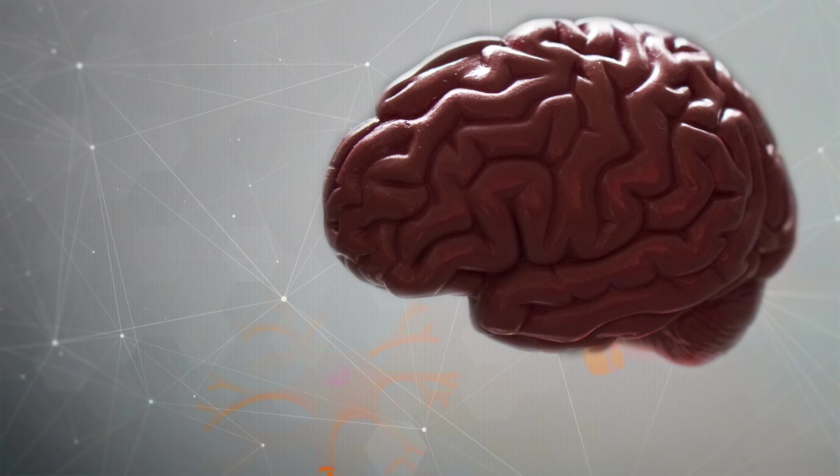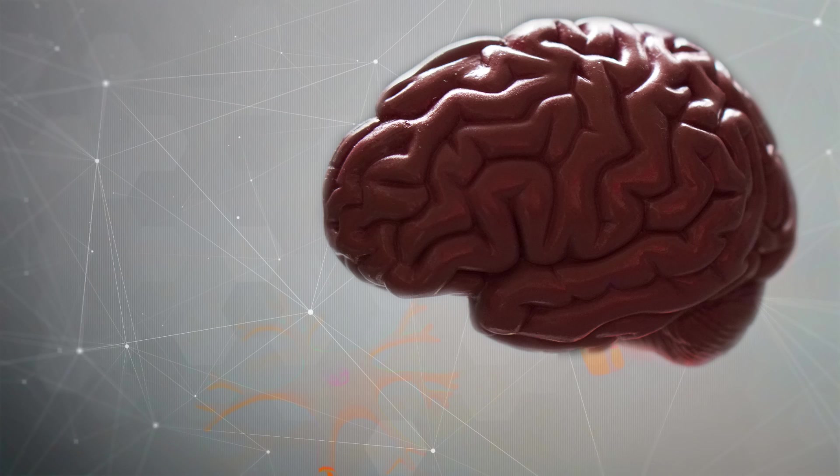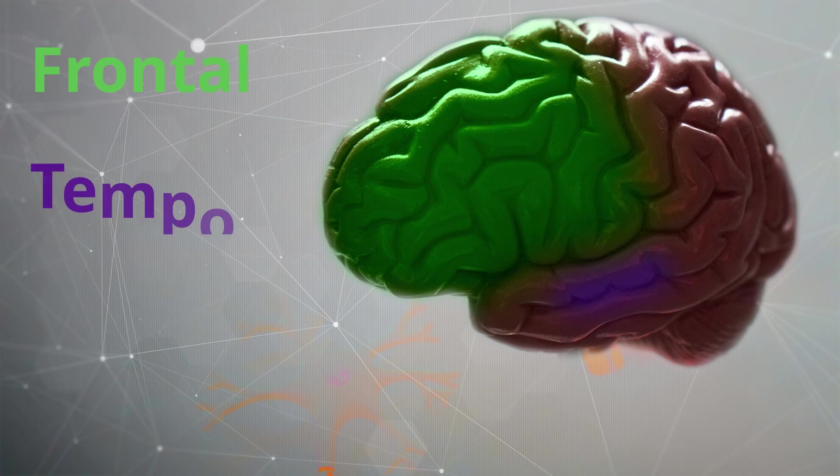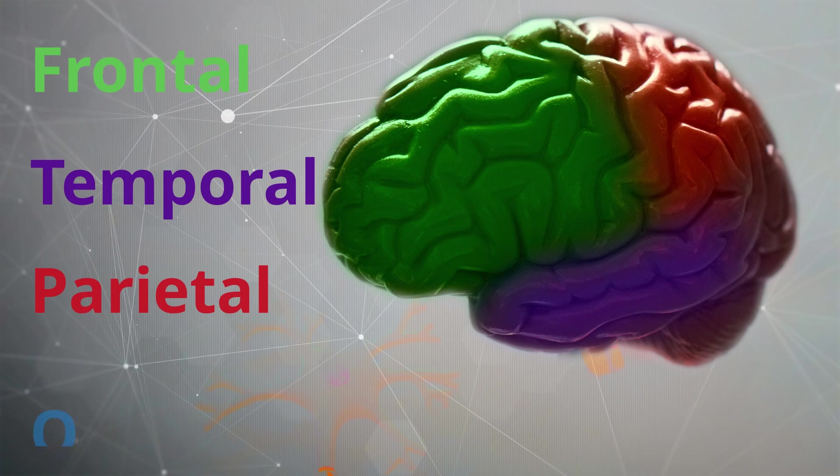To start with, here is the anatomy of the brain. This is visually and structurally divided into four lobes: the frontal, temporal, parietal and occipital lobe.